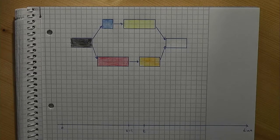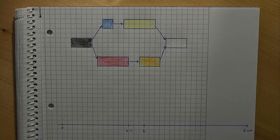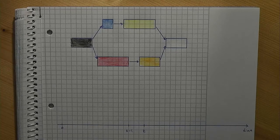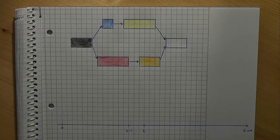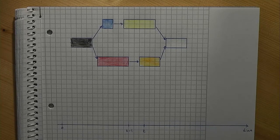Given is a set of n jobs that must be scheduled. We have n equal to 6 jobs in our example, which are represented by different colors. Each job i has a predefined non-negative processing time p_i, represented by the width of the colored boxes in this picture.